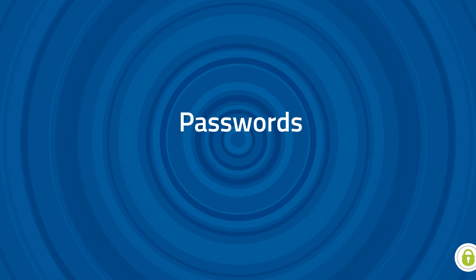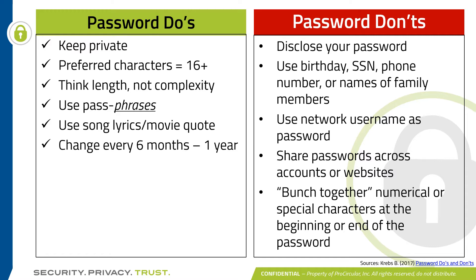Let's talk about passwords. Make sure you keep your passwords private. The preferred length is at least 16 or more characters. Think about making them very lengthy, not necessarily complex — you could use a passphrase like 'it's tea time' instead of just a password. Use song lyrics or a movie quote and change them often, like every six months to a year. Don't disclose your password to anybody. Don't use your birthday, your social security number, your phone number, or family names. Don't use the username as the password. Don't share your passwords across accounts and websites — your Amazon password should be different from your Google, Apple, and Target passwords. And don't bunch together numerical or special characters at the beginning or end of the password.